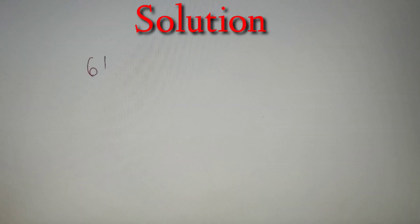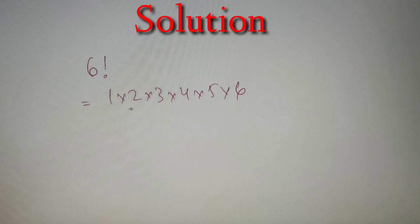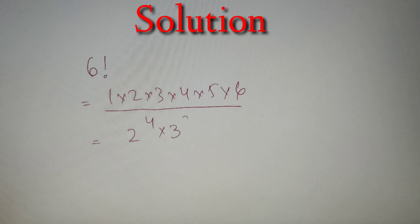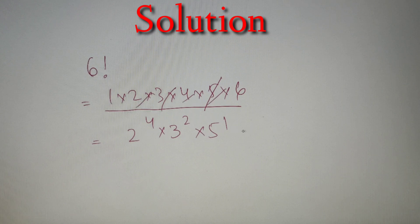In our third example, we have to find the sum of reciprocals of all the factors of 6!. We know that 6! = 1 × 2 × 3 × 4 × 5 × 6 = 720. The prime factorized form of 6! is 2⁴ × 3² × 5¹, since there are four 2s, two 3s, and one 5.